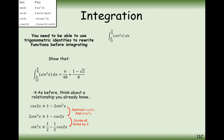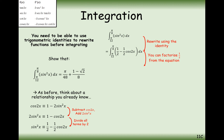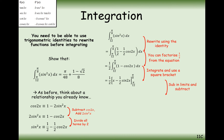So instead of integrating sine squared x, we integrate one half minus one half cos 2x. We can factor out the half and integrate the individual components separately. One integrates to x, and cos 2x integrates to one half sine 2x. Leaving the half out front until the end, we then substitute in our limits — pi by 8 going in, then subtracting pi by 12 going in.